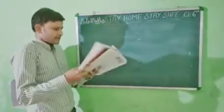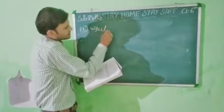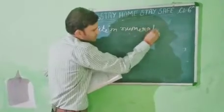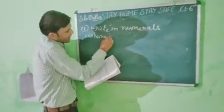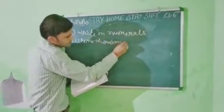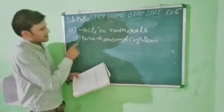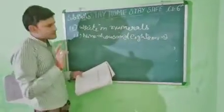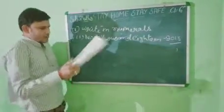Exercise one, question one: Write in numerals. First: nine thousand and eighteen. 9,000 plus 18 — writing in figures gives us 9,018. That is, 9 × 1,000 plus 0 × 100 plus 18 equals 9,018.